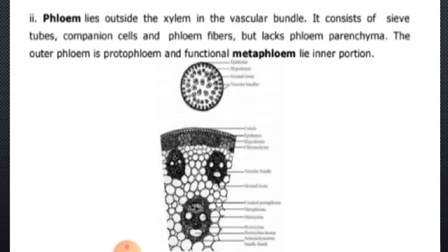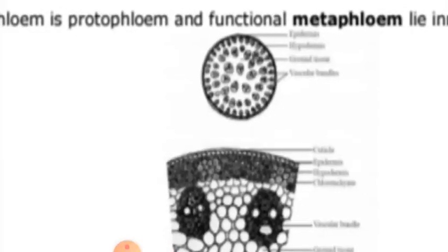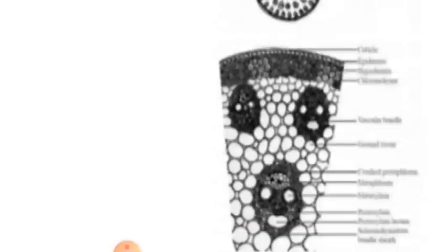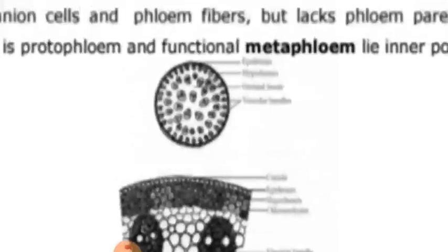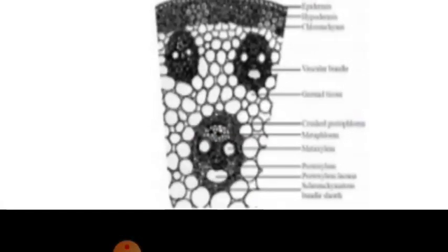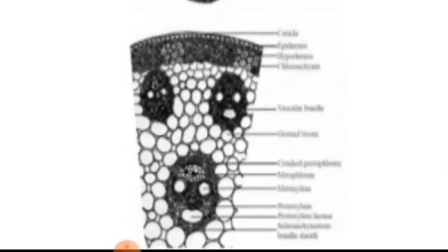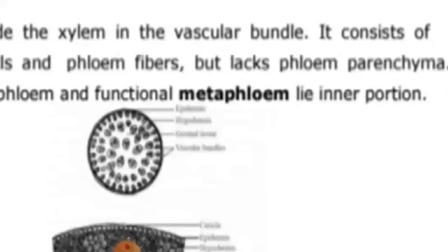The outer phloem is called protophloem and the functional metaphloem lies in the inner portion. So the outer phloem is called protophloem and the functional metaphloem is in the inner portion. Here, protophloem is in the outer portion and meta xylem — that is, the functional portion — lies in the inner portion.